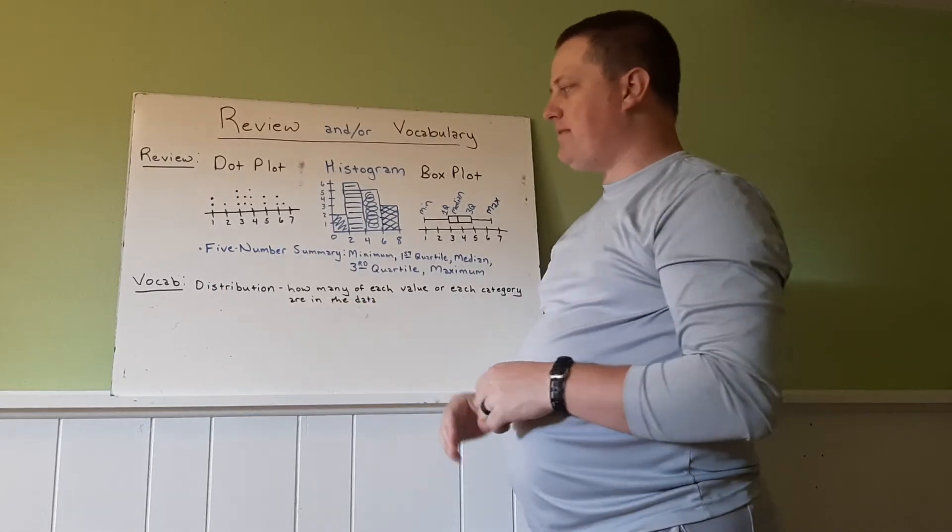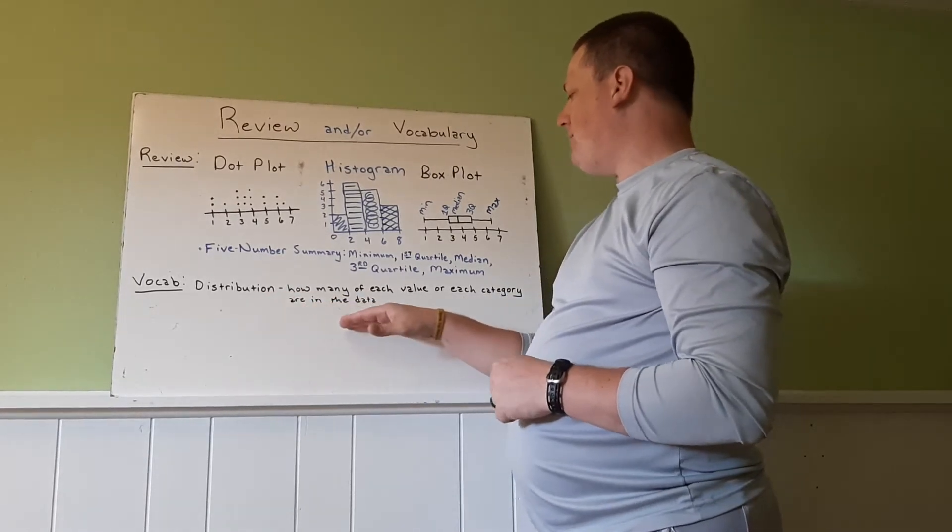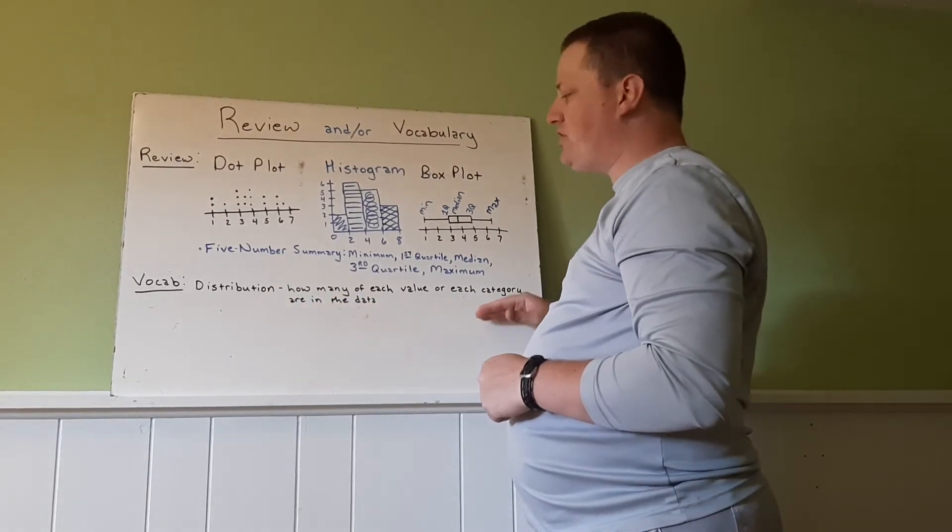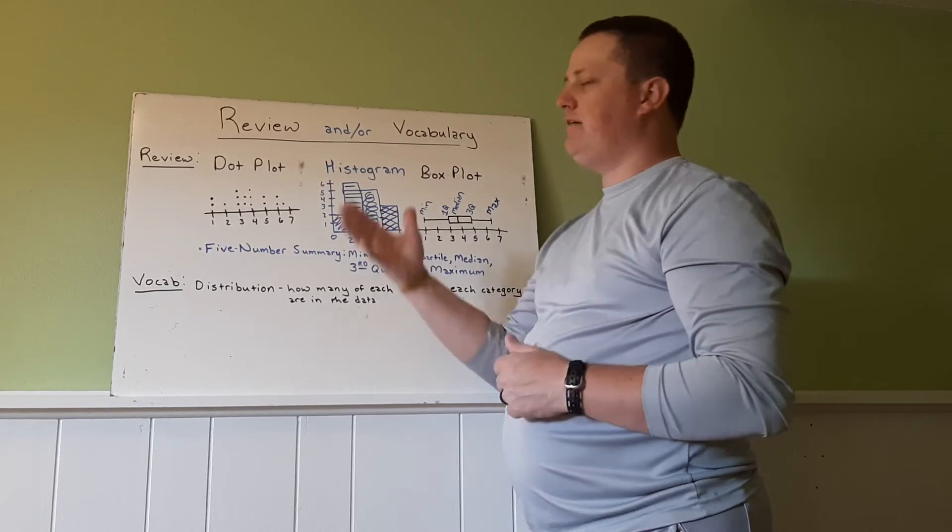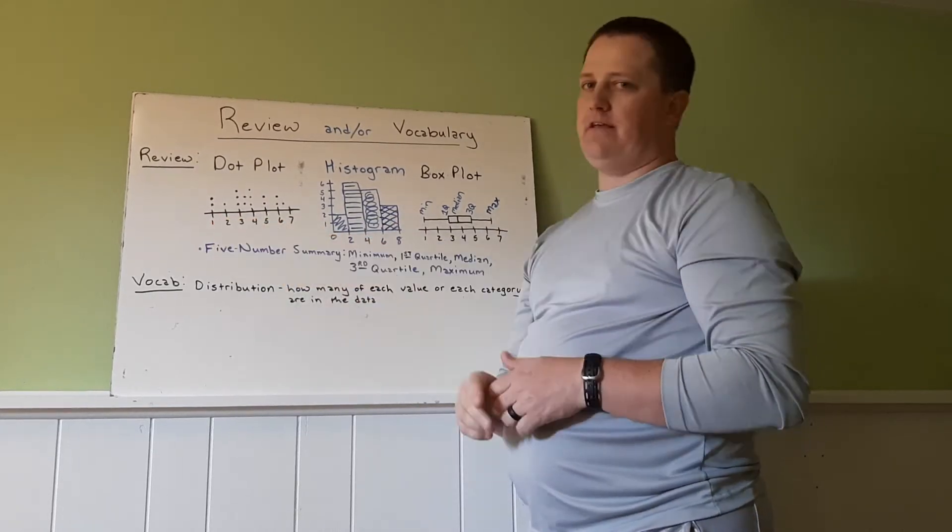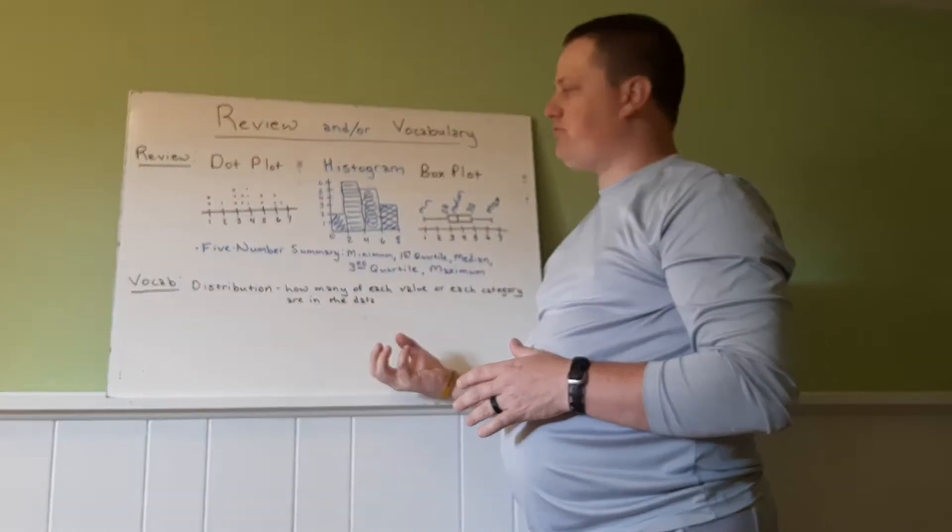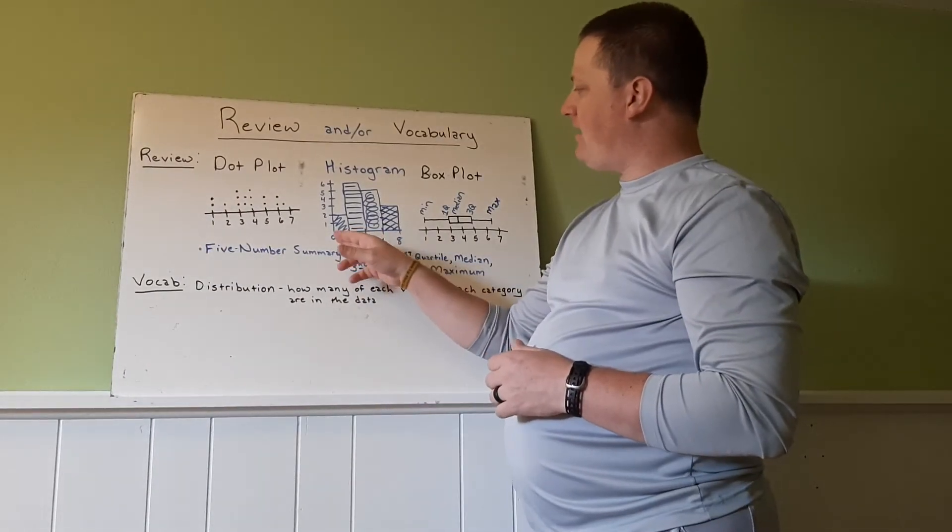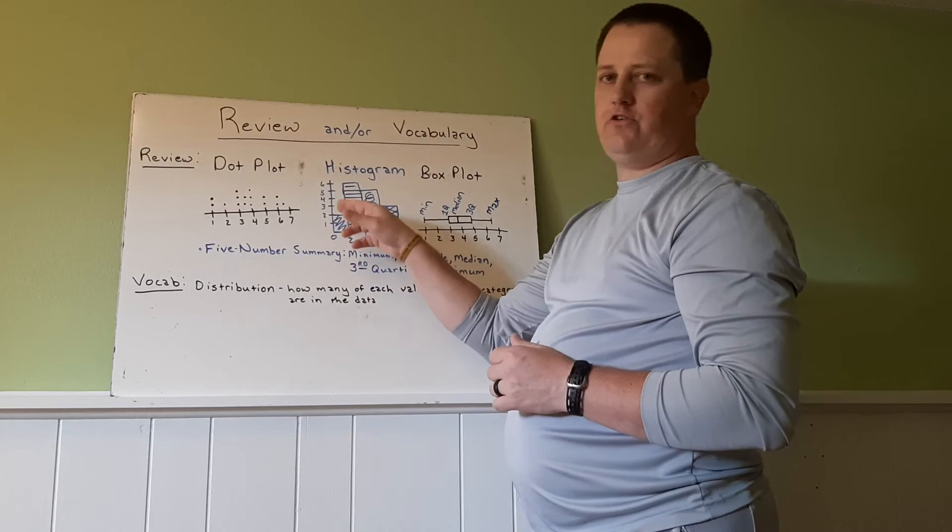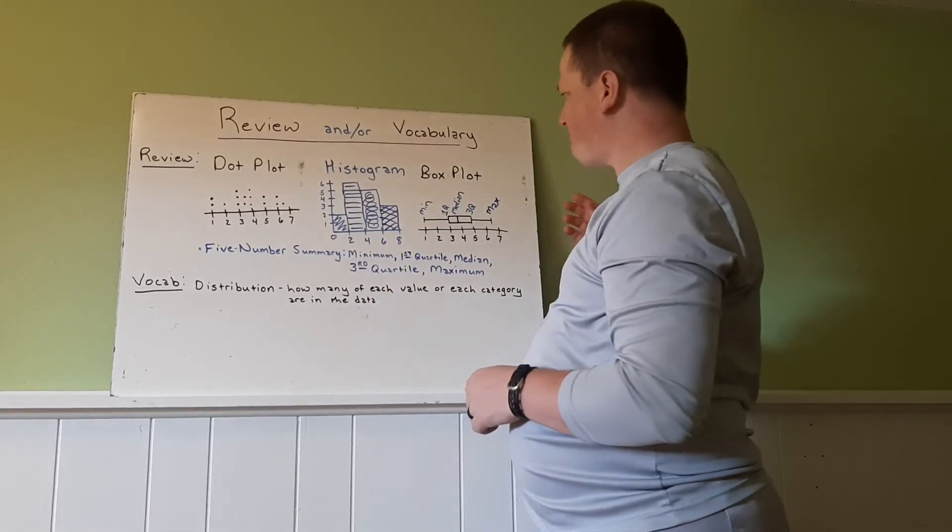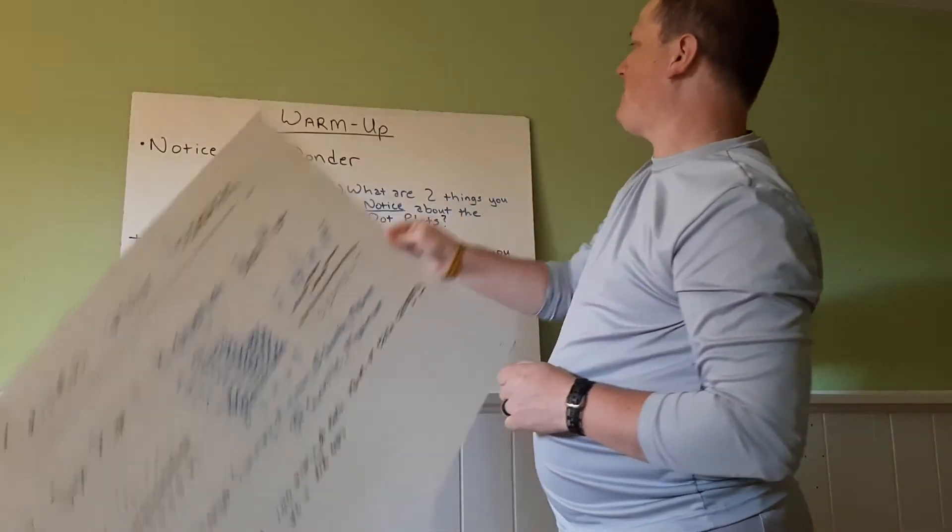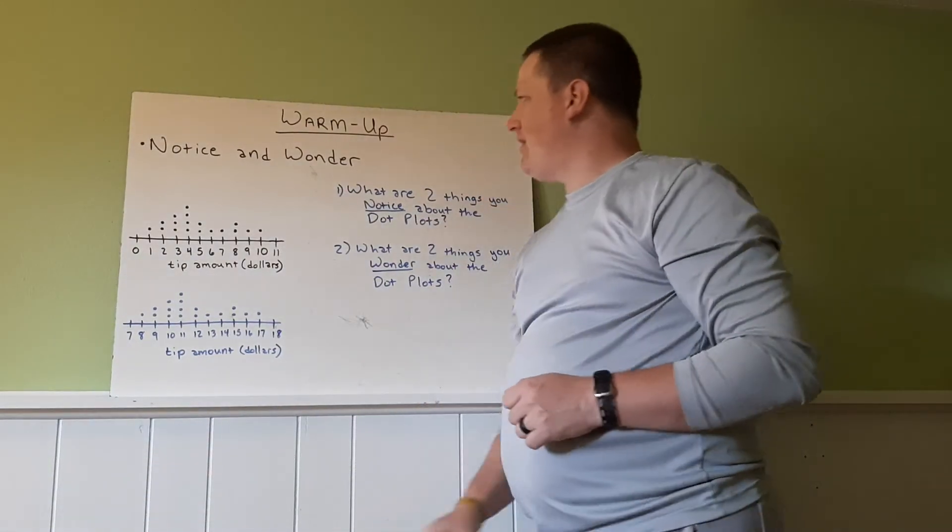Then our vocabulary today is distribution. How many of each value or each category are in the data? So an example is in this spot, there are two ones. So that would be the distribution. In this category of zero to two, there are two values there.